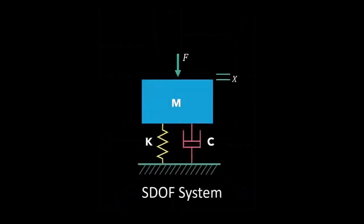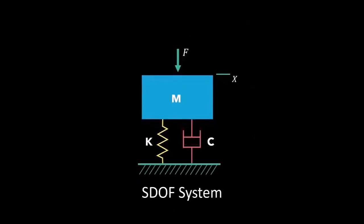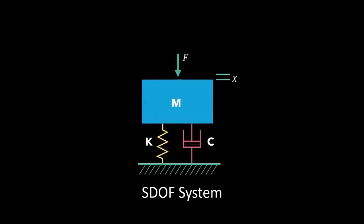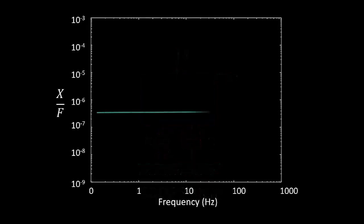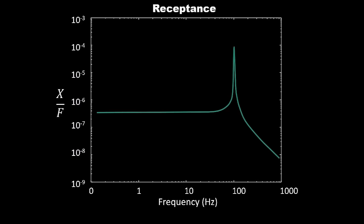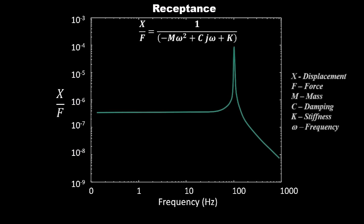We have our original single degree of freedom system. We have a mass M, a stiffness K, and a damping C. We have a force being applied that's F, and the amount of displacement it's moving is X. I'm going to redraw that receptance equation, and this is an FRF — a frequency response function. It is calculated by taking the displacement X over F, or an output over an input, which is all an FRF really is. This FRF is called receptance.